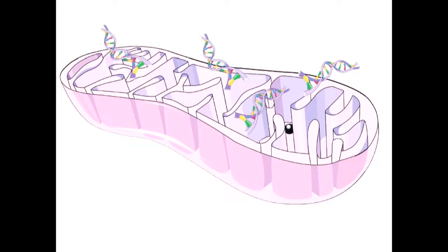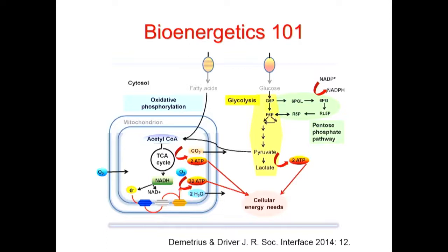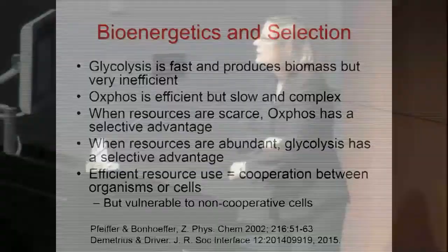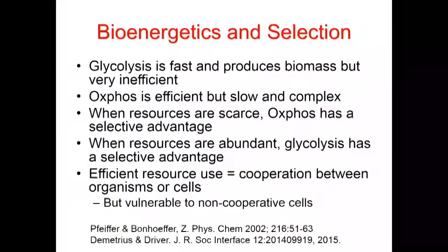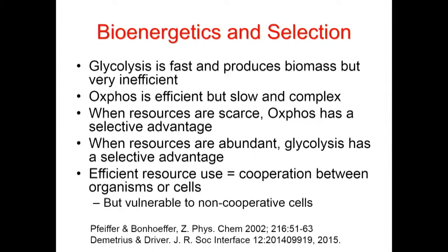People forget that there's DNA in mitochondria. To give you a refresher: we have two major ways of making ATP. One is glycolysis — very simple but inefficient, though it produces biomass and helps produce antioxidants. Then we have oxidative phosphorylation, which produces many more ATP, is very efficient but much more complex, and many things can go wrong in the mitochondria. The idea is that when resources are scarce, oxidative phosphorylation has a selective advantage; when resources are abundant, glycolysis has the selective advantage. Efficient resource use requires cooperation between cells.